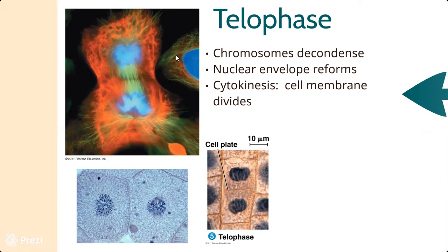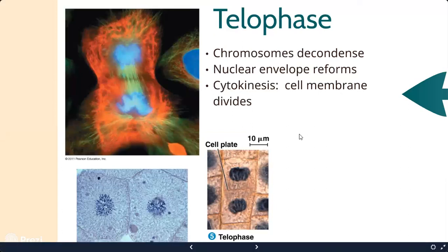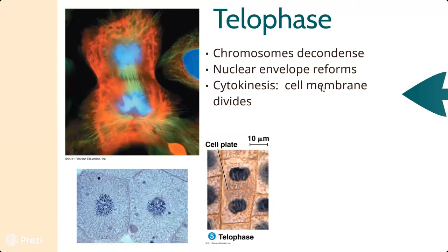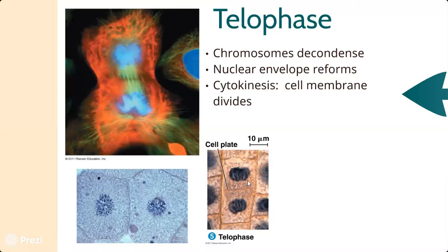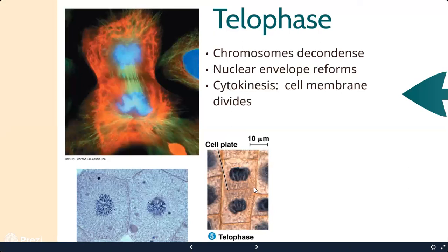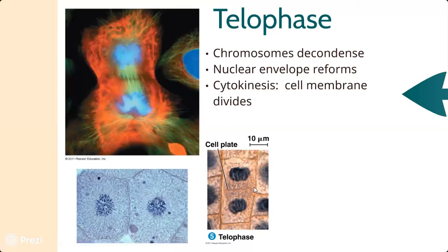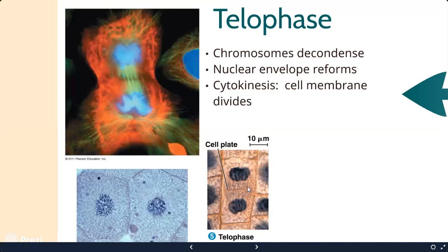While telophase is happening, a separate process called cytokinesis also occurs - this is the whole cell dividing into two. In animal cells, the cell membrane pinches in with something called a cleavage furrow, formed by microfilaments that ratchet inward and drag the membrane until it pinches off into two daughter cells. In plant cells, a cell plate forms instead: special vesicles full of cellulose fuse along the middle plane, their phospholipids forming the new cell membrane, while the cellulose inside connects up to form a new cell wall.